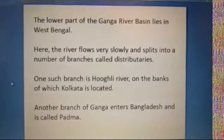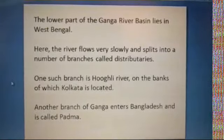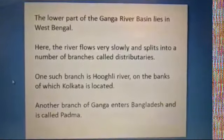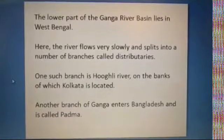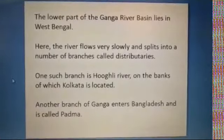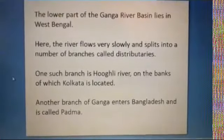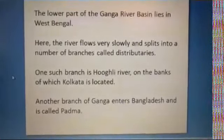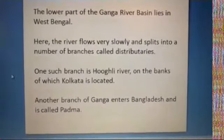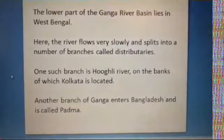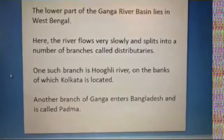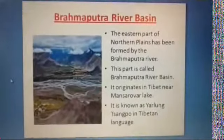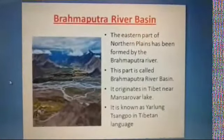The lower part of the Ganga River Basin lies in West Bengal. Here the river flows very slowly and splits into a number of branches called distributaries. One such branch is the Hooghly River, on the banks of which Kolkata is located. Another branch enters Bangladesh and is called the Padma.